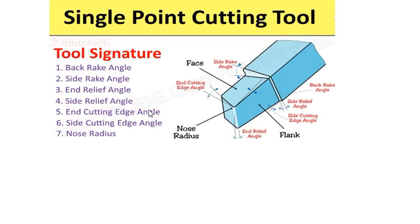I will explain in this figure what is the back rake angle, side rake angle, end relief angle, side relief angle, end cutting edge angle, side cutting edge angle, and nose radius. Here you can observe all the angles. Understanding these angles and their uses is very important.